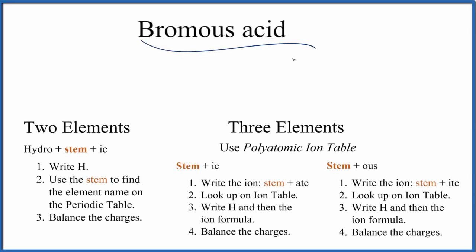Let's write the formula for bromous acid. Since we have an acid here, it's going to start with H. Acids usually start with H, so we have our hydrogen atom here. We'll put that right up front.